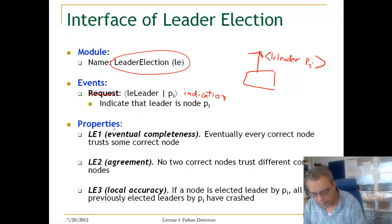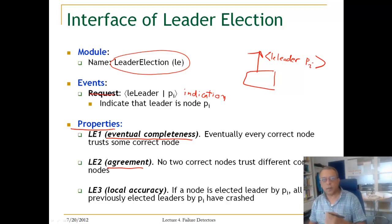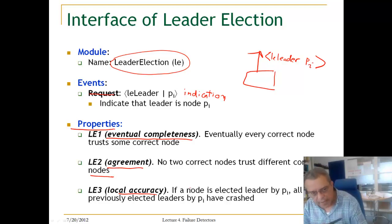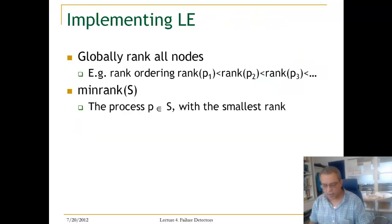The properties of LE are: eventual completeness — eventually trust some correct node; agreement — no two nodes trust different nodes; and local accuracy — if a node elects some node, then all previously elected nodes must have crashed. Now let us look at the implementation satisfying these properties.